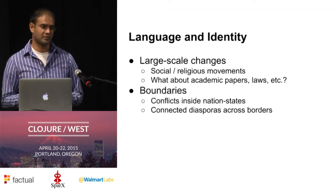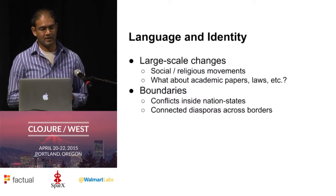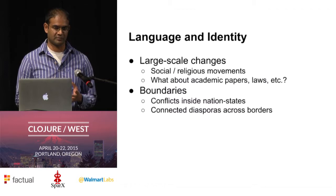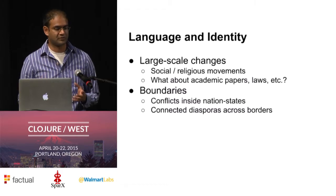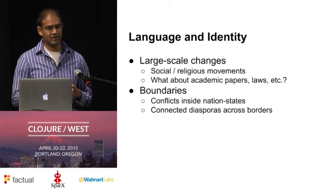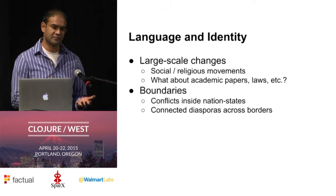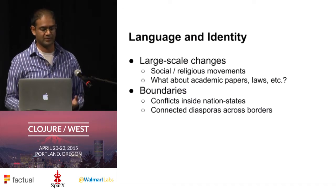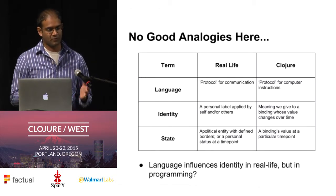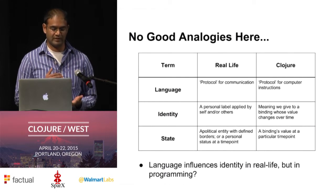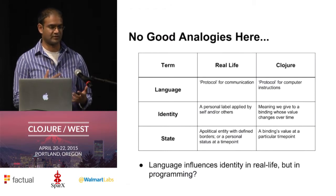Language is something that can contest as well as cross boundaries. A lot of nation-states were formed after the decline of Western empires in the mid-20th century, and in those new nation-states, two or more groups speaking different languages were artificially put together, resulting in a lot of tensions. But inversely, language can also connect us — people speaking the same language across large distances form diaspora communities, like an English-speaking, Chinese-speaking, or even Tamil-speaking diaspora. Even though I'll use certain analogies in this talk, there's no perfect analogy — terms like language, identity, and state mean something in Clojure, but those relationships don't exist in the real world in the same way.